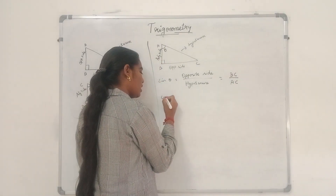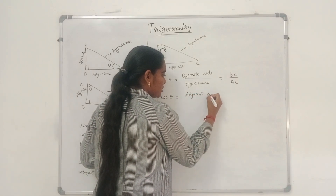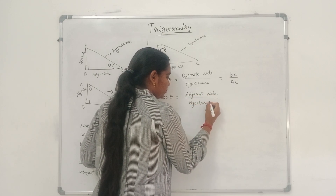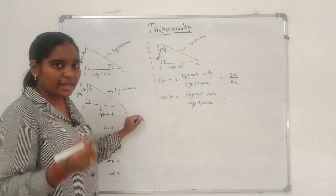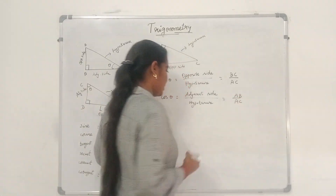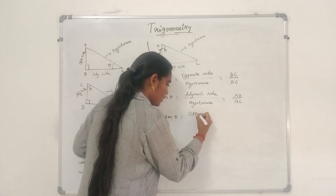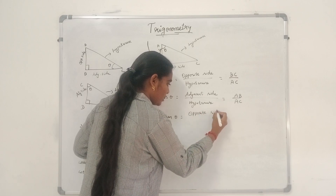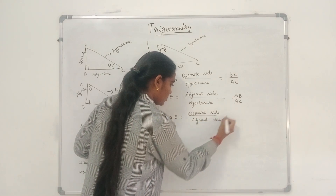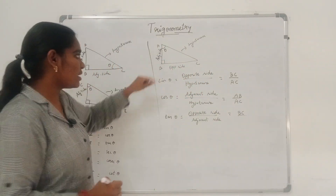Cos theta is adjacent side by hypotenuse. The side adjacent to theta is AB and hypotenuse is AC, so cos theta equals AB by AC. Tan theta is opposite side by adjacent side. The side opposite to theta is BC and adjacent is AB, so tan theta equals BC by AB.